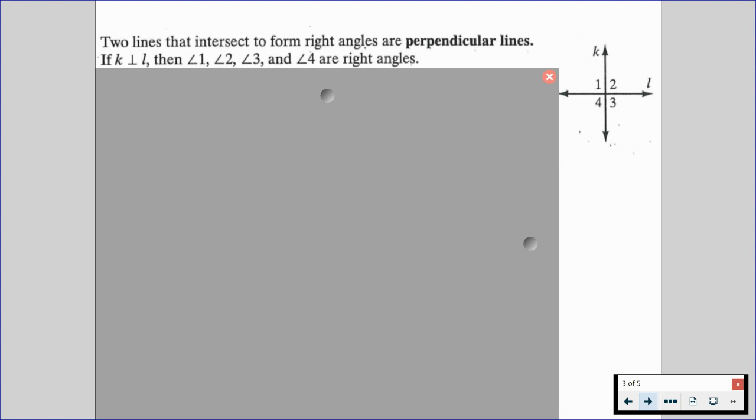On the right hand side, we are given a diagram involving lines K and L. Two lines that intersect to form right angles are perpendicular lines. So if we are given that line K is perpendicular to line L, then angle 1, angle 2, angle 3, and angle 4 are right angles. And if you notice, we have that perpendicular sign. It looks like an upside-down T. That is shorthand for perpendicular, so as long as you want to use that in a clean and logical manner, by all means, go for it.